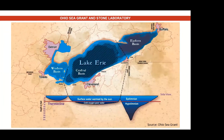Lake Erie has three regions, or basins: the Western Basin, the Central Basin, and the Eastern Basin. Together, these basins cover the shoreline of Ohio from Toledo to Conneaut and all the cities in between.